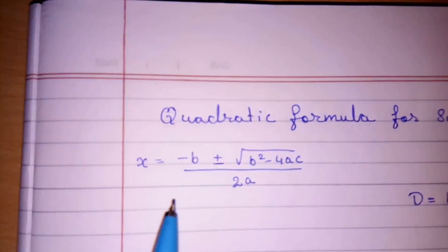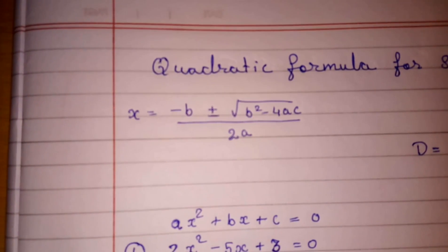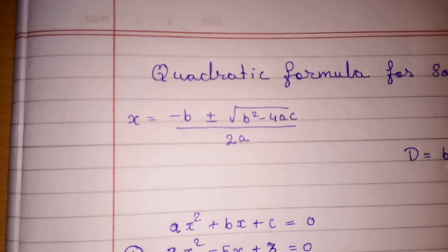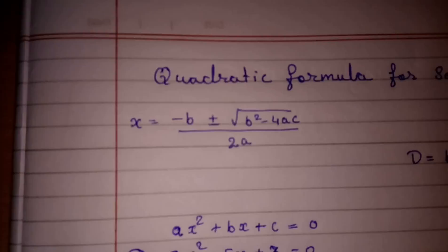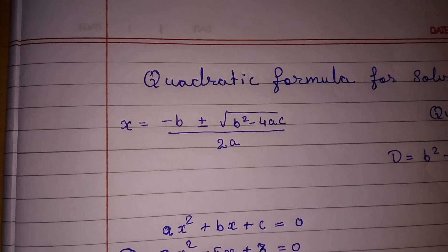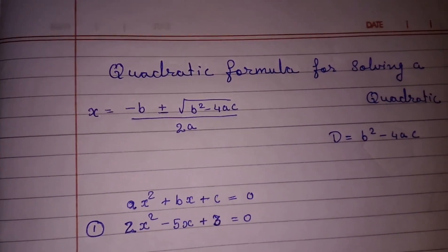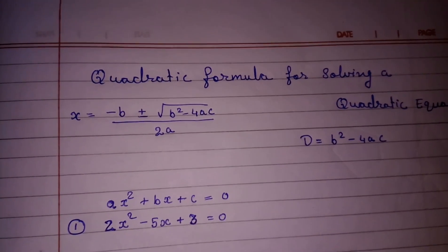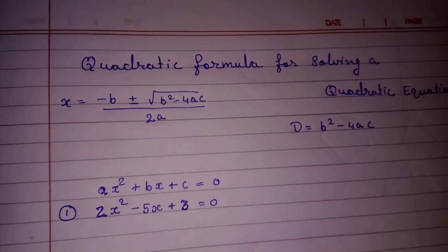Now with the help of these numbers, there is one formula. Look here. This is the formula: x = (-b ± √(b²-4ac))/2a. We have to use this and solve this quadratic formula.